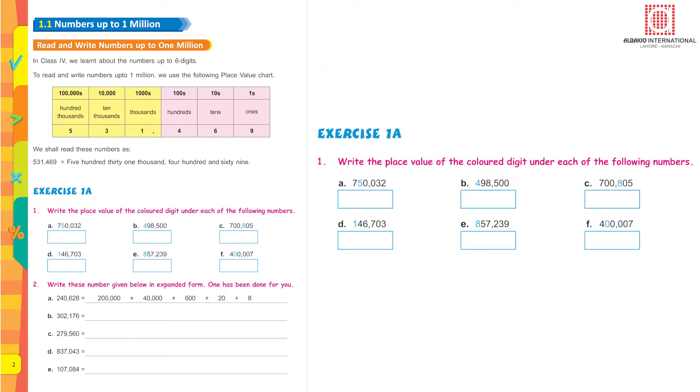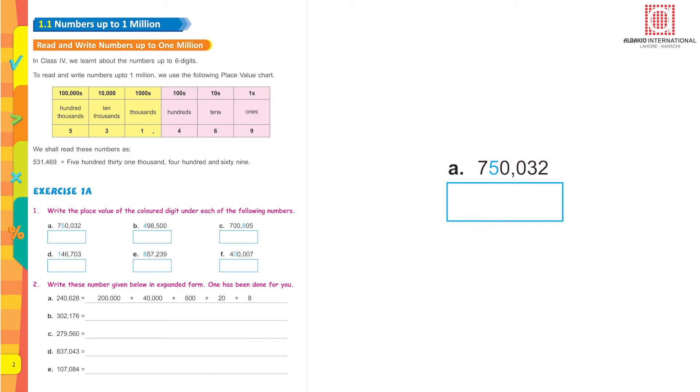Exercise 1a. Write the place value of the colored digit under each of the following numbers. Part A is 750032. 5 is the digit which is colored and we have to find the value of digit 5.